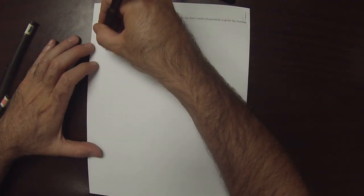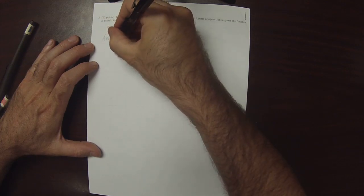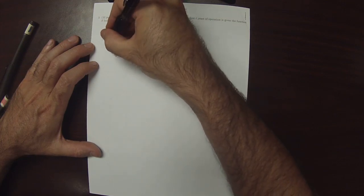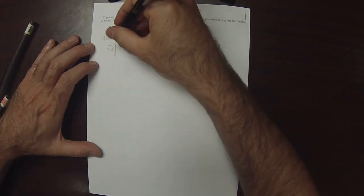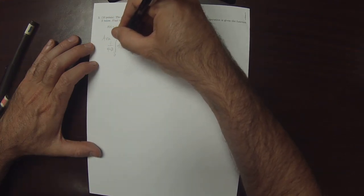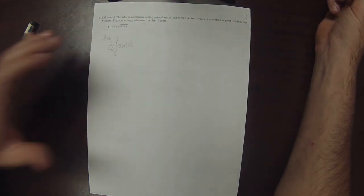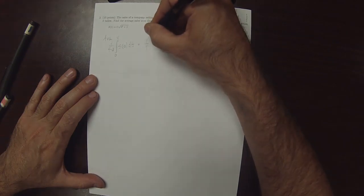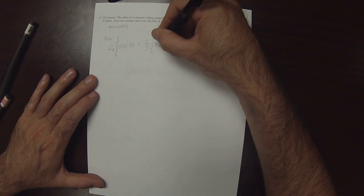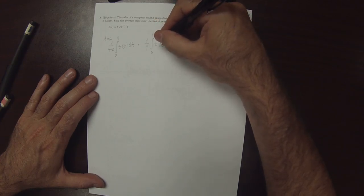So the average will be integral 1 over 4 minus 0, 0 to 4, s of t dt. So that would be 1 over 4, integral 0 to 4, t square root t squared plus 1.